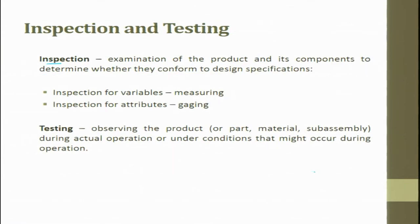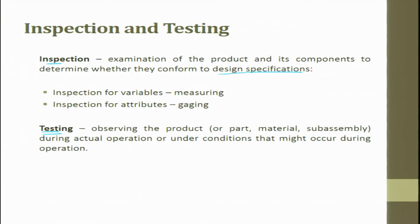Inspection is the examination of the product and its components to determine whether they conform to design specifications. Inspection of variables involves measuring dimensions, while inspection of attributes covers defective/non-defective classification. Testing is observing the product during actual operation or under conditions that might occur during operation. Inspection and testing are different — inspection checks conformance to specification, while testing observes the product under operating conditions.